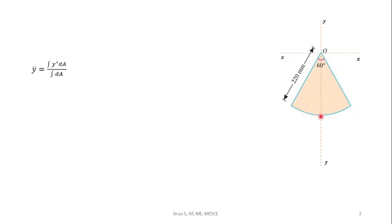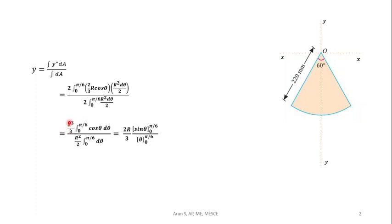Since it is symmetrical, instead of integrating from -π/6 to π/6, we can integrate from 0 to π/6 and multiply it with 2. So the integration becomes 2 times integral 0 to π/6 of y*, 2/3 R cos θ, dA, R² dθ by 2. Similarly the area, integrating 2 times integral 0 to π/6 R² dθ by 2. This simplifies to 2R³/3 integral 0 to π/6 cos θ dθ by R²/2 integral 0 to π/6 dθ.